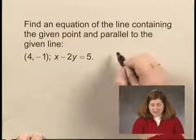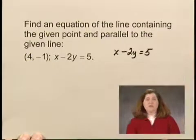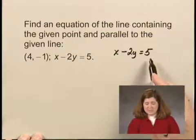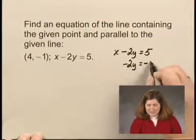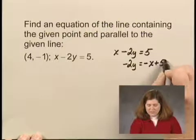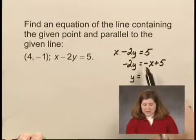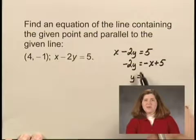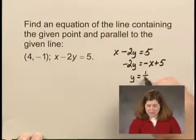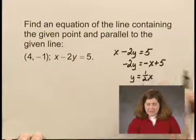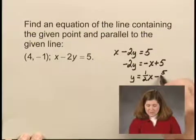So let's start by solving x minus 2y equals 5 for y in order to determine the slope of this line. Subtracting x from both sides, we have negative 2y equals the opposite of x plus 5. Dividing by negative 2, we have y equals — the opposite of x divided by negative 2 gives us x over 2, or 1/2 x. And 5 divided by negative 2 gives us negative 5 halves.